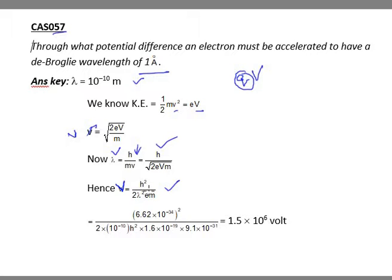Now just put the values. H value we know is 6.6 into 10 raised to minus 34, so we will square it. And lambda value in the question is 1 angstrom, which is 1 into 10 raised to minus 10.